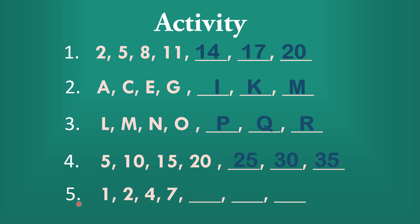Last example: 1, 2, 4, and 7. So 1 plus 1 is 2. 2 plus 2 is 4. The number added here is 1, then 2, so the next difference is 3. 4 plus 3 is 7.